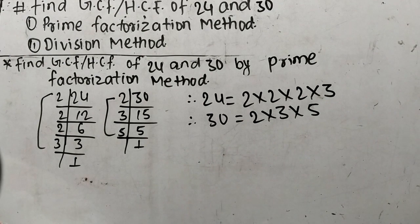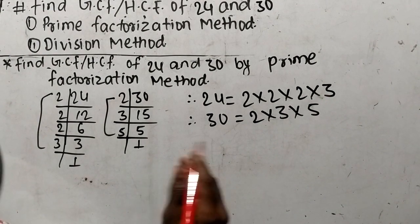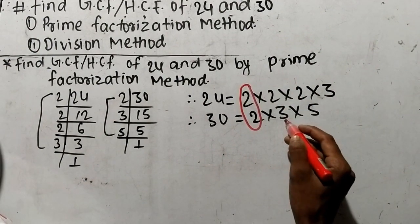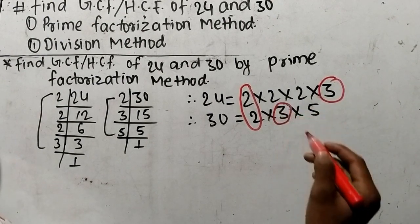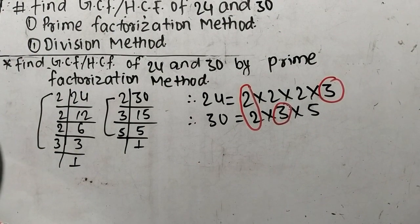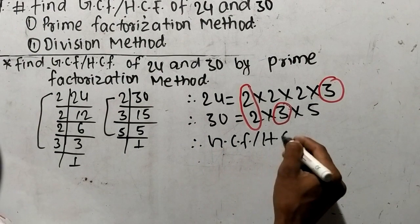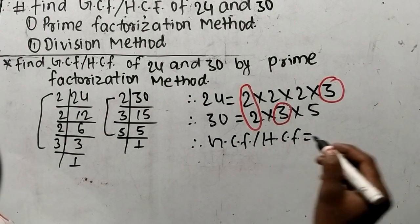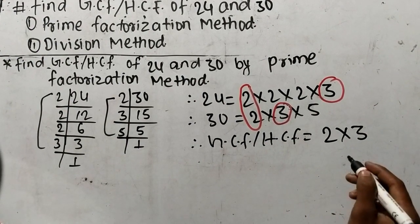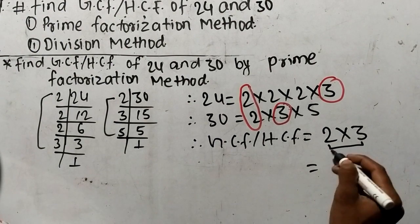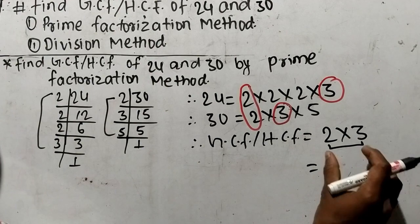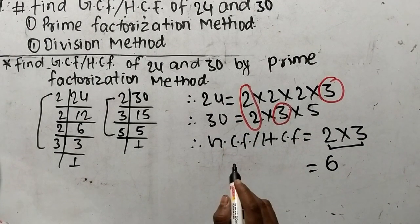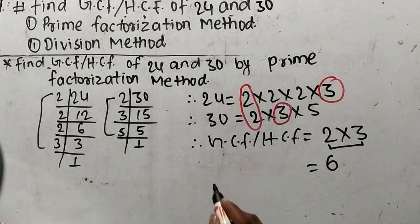Now we find out the common factors in these prime factors. Here 2 appears in both, so 2 is our first common factor. Here 3 also appears in both, so 3 is our second common factor. The remaining 2 and 5 are non-common factors. GCF or HCF is the product of all common factors only. So our common factors are 2 and 3, and their product is 2 x 3 = 6. Therefore, 6 is the GCF or HCF of 24 and 30.